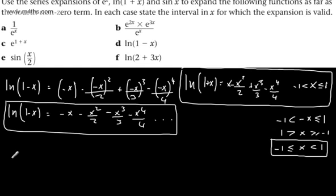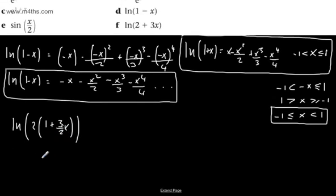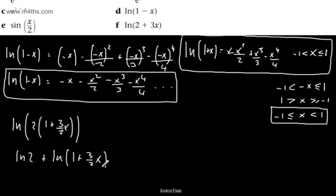For the next one, I'm going to rewrite it as the natural log of 2 times 1 plus 3 over 2 x, by factoring out the 2. This is a product, so we can write this as the natural log of 2 plus the natural log of 1 plus 3 over 2 x, just using our log laws.